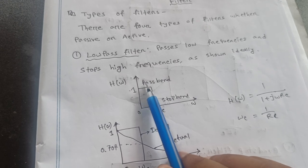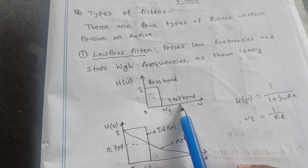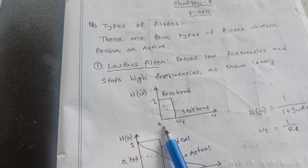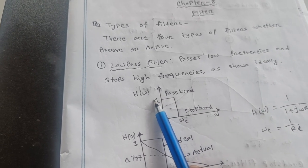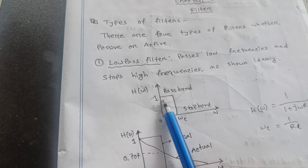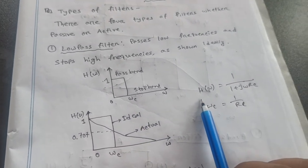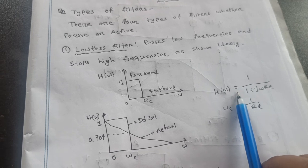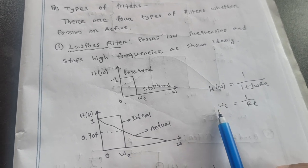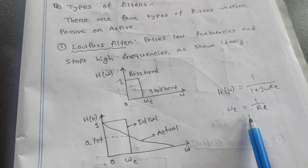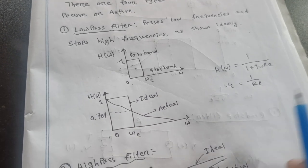Such as pass band and stop band. Now, omega c, 0 and 1. Then particularly pass band filter and stop band. Then H omega equals 1 by 1 plus j omega RC. And then omega c equal to 1 by RC. That's the example.